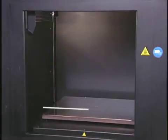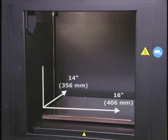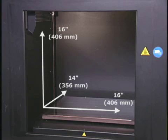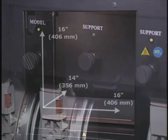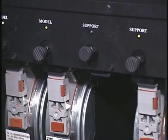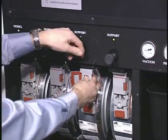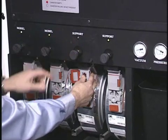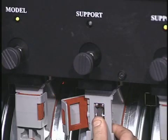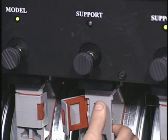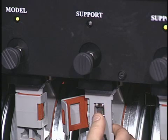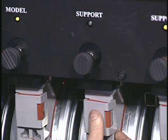For larger capacity and longer unattended build times, the Fortis 360MC can be upgraded to a larger 16 by 14 by 16 inch build envelope and dual canister bays — two for build material and two for support material. With the dual bay configuration, an auto changeover function switches from the first canister to the second during part production, allowing the build process to continue uninterrupted with no user intervention or presence required.